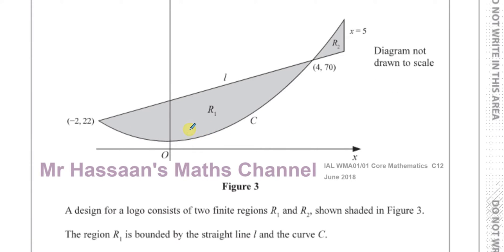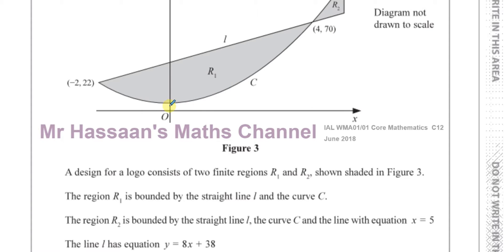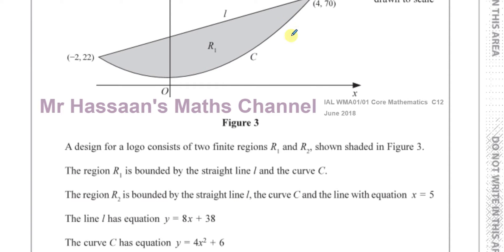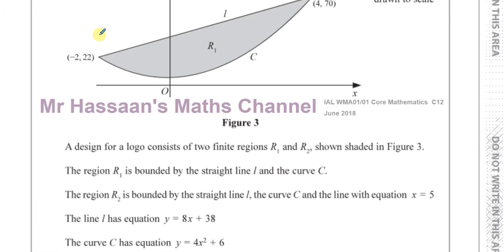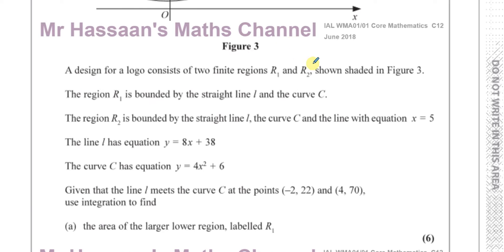The region R1 is bounded by the straight line and the curve C, and the region R2 is bounded by the straight line L and the curve C, and the straight line with equation x equals 5. The line L has equation y equals 8x plus 38, and the curve C has equation y equals 4x squared plus 6. Given that the line L meets the curve C at the points minus 2, 22 and 4, 70, use integration to find the area of the larger lower region labelled R1.